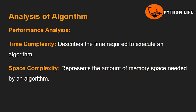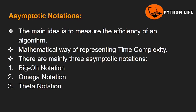The next topic is asymptotic notations. This is a theoretical tool. The main idea is to measure the efficiency of an algorithm. It is the mathematical way of representing time complexity. There are mainly three asymptotic notations: first, Big O; next, Omega; next, Theta.